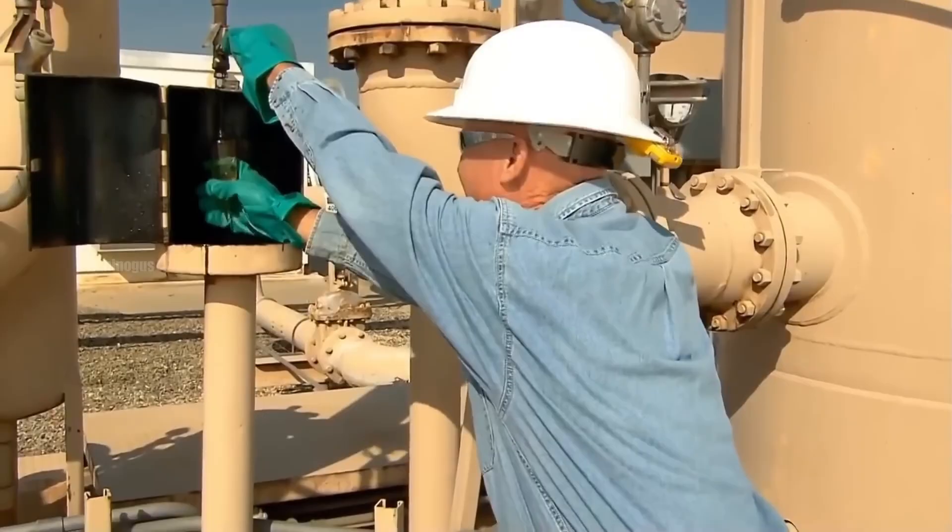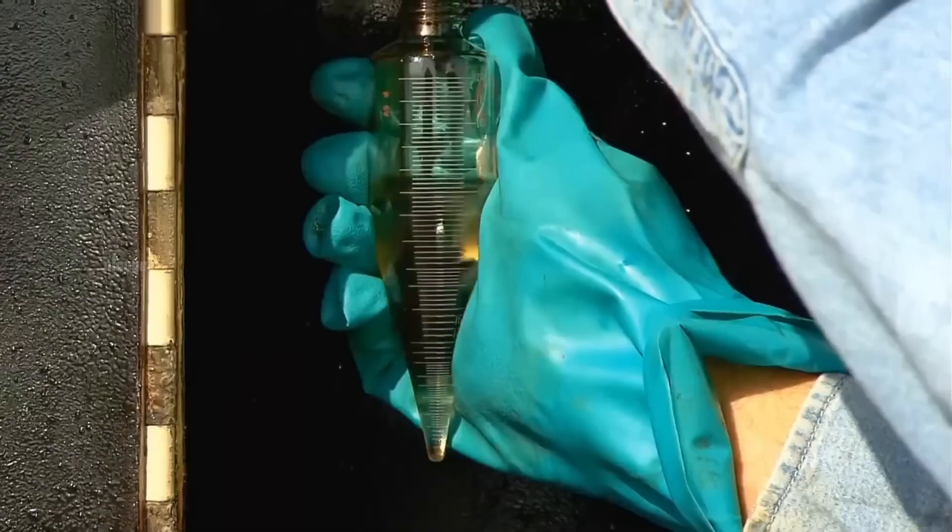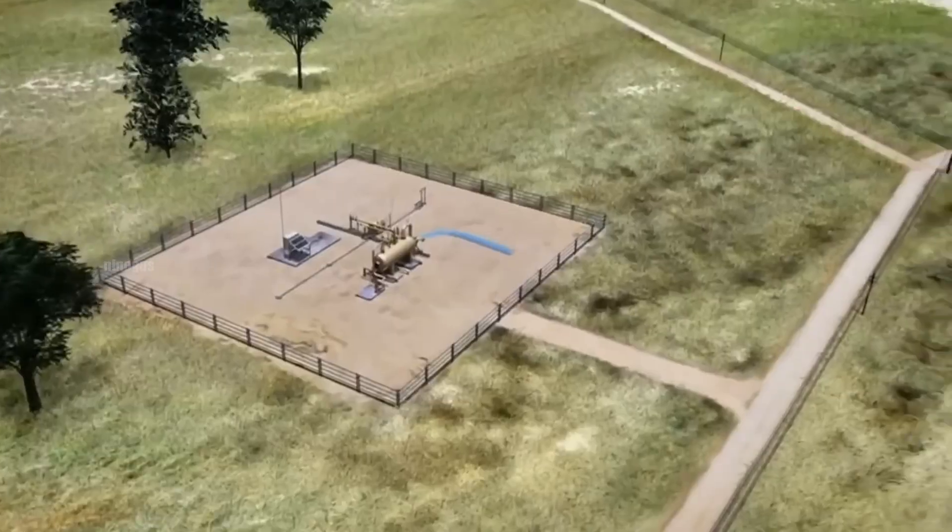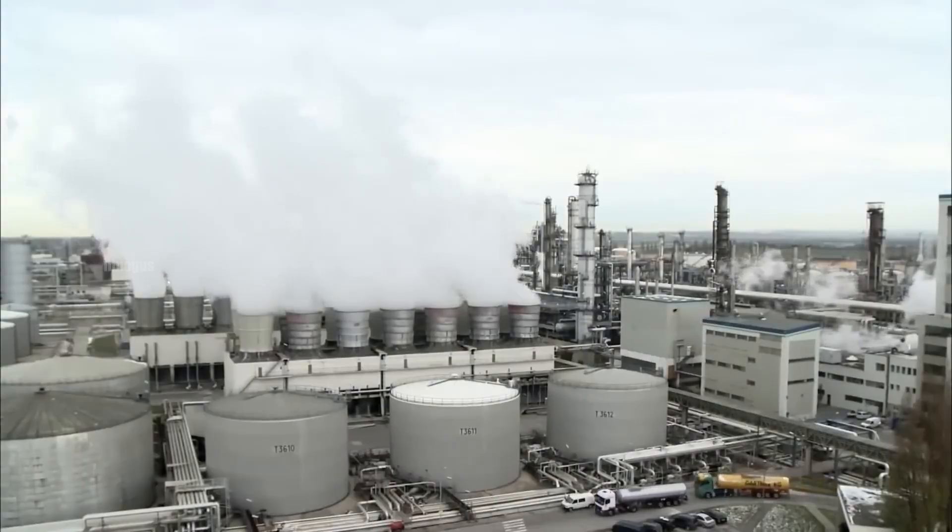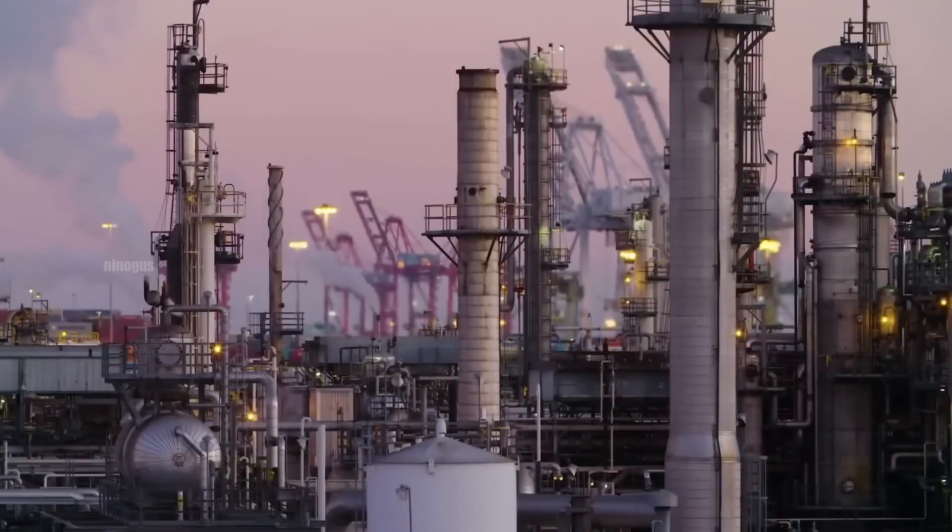The fluid pumped from underground by the pump jack is not just crude oil alone. Usually, it is a mixture of crude oil, water and gas. Therefore, once this fluid reaches the surface, the next step is to separate these components so that each can be processed further according to its purpose.